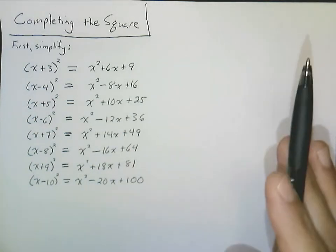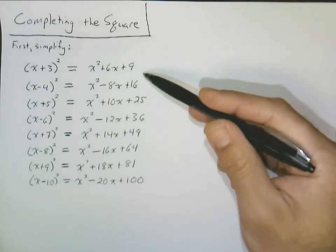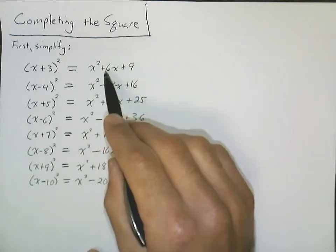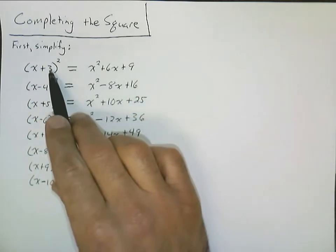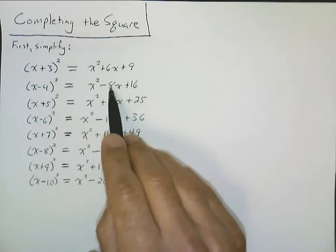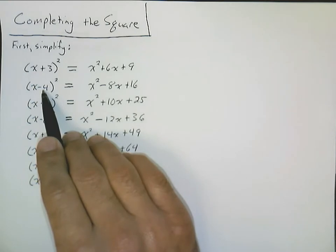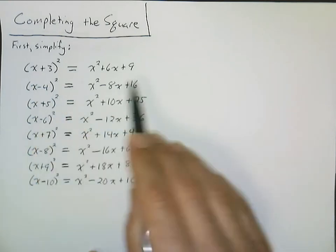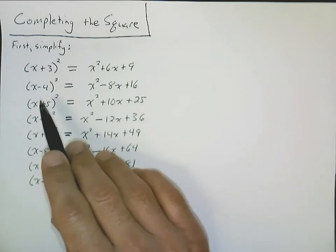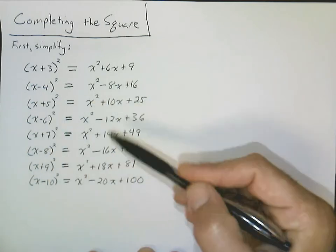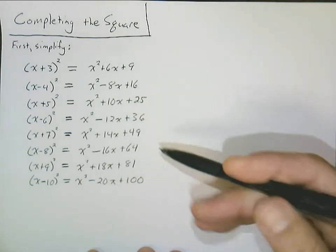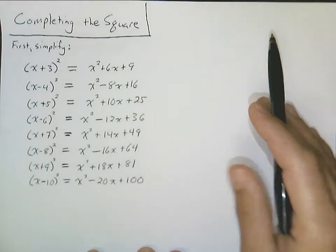The main thing here is that completing the square is based upon this pattern that we see. Notice: half of 6 is 3, and 3 squared is 9. Half of negative 8 is negative 4, and the square of negative 4 is 16. Half of 10 is 5, and 5 squared is 25. And so on and so forth — that's the big idea here.